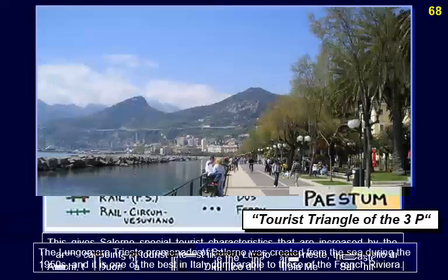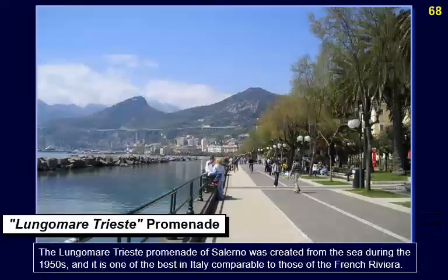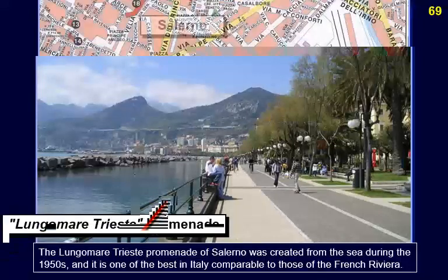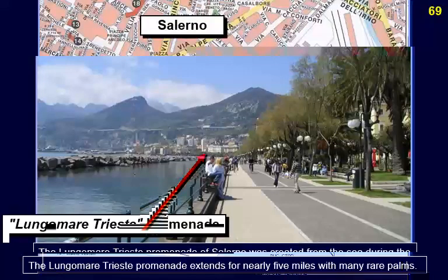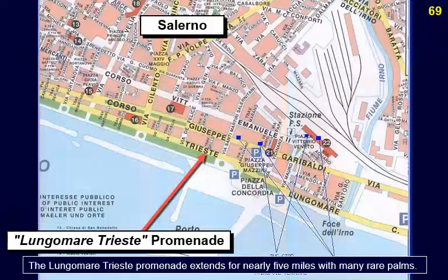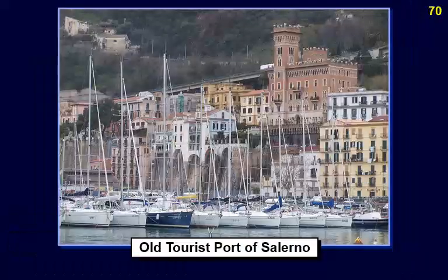The Lungomare promenade of Salerno was created from the sea during the 1950s and is one of the best in Italy, comparable to those of the French Riviera. The Lungomare promenade extends for nearly five miles with many rare palms. This is the old tourist port of Salerno.